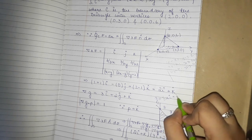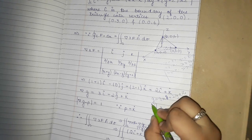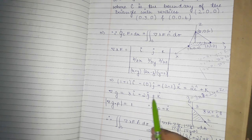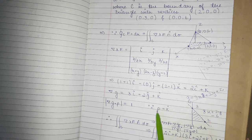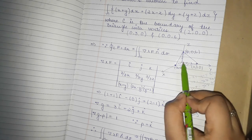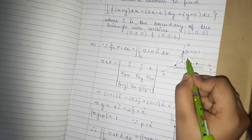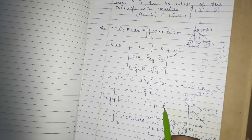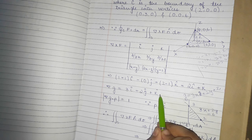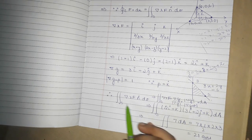Taking the gradient of g gives us grad g = 3i + 2j + k cap. Now, because this surface casts a shadow region on the xy-plane, the unit normal p is equal to k cap. So grad g · p equals 1, and its magnitude also gives 1.